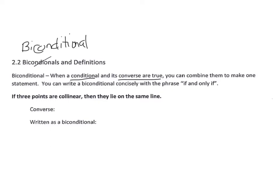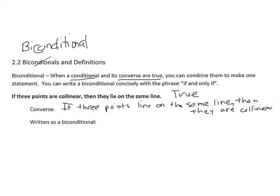Take the statement: if three points are collinear, then they lie on the same line. This is a true statement. Now writing its converse: if three points lie on the same line, then they are collinear. Notice you want to start the sentence describing what you're talking about rather than starting with 'they' or 'it.' This converse is also true.